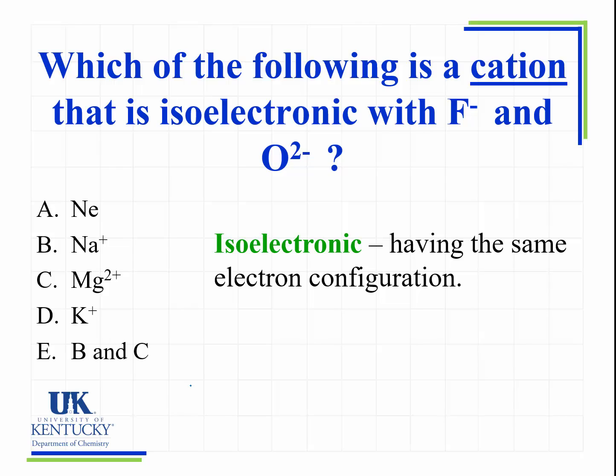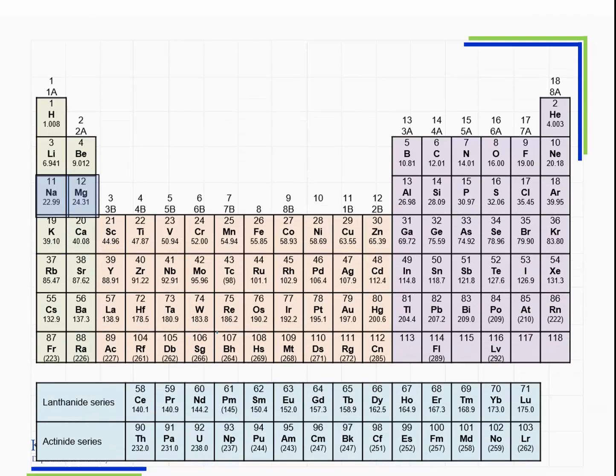Now, I would like for you to find the cation that is isoelectronic with F- or O2-. Or it might be more than one because you'll notice E here is both B and C. Did you select E that both B and C, meaning both sodium and magnesium, are isoelectronic? Well, that's the correct answer.